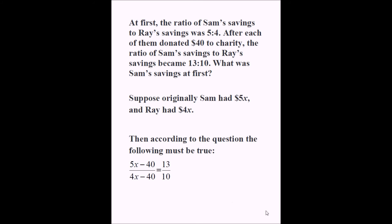They each donated $40. So if Sam donated $40, Sam was left with 5x minus 40. After Ray donated $40, Ray was left with 4x minus 40. The ratio of Sam's new amount to Ray's new amount is 13 to 10. So we can write the equation: (5x − 40) divided by (4x − 40) equals 13 over 10. These two expressions on the left must equal 13/10, and we can now solve this equation for x.